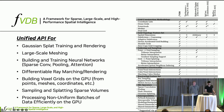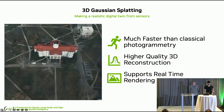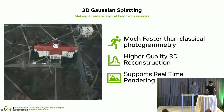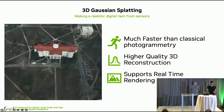FVDB is now integrated into products like Atomic Maps. The key takeaway is that FVDB is a unified framework for building spatial intelligence applications that can handle high-resolution and large-scale volumetric data, built on top of PyTorch to leverage the GPU and optionally enable deep learning. The main thing we're talking about today is Gaussian splat training and rendering. Gaussian splatting takes images with camera poses and converts them into a digital twin you can visualize. It's much faster than classical photogrammetry — going from days to minutes — with higher quality reconstruction and real-time rendering support.